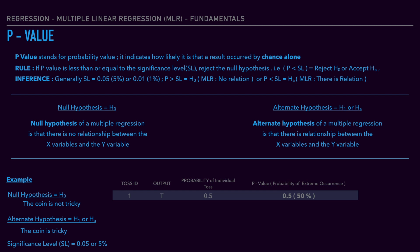First toss, we get a tail. The probability of getting a tail in one toss is 50%, so the P-value is 0.5. We toss again and get tail again. For two continuous tails, we multiply the probabilities: 0.5 × 0.5 = 0.25, so there is a 25% chance. Third toss, we get tail again. The P-value is now 0.5 × 0.5 × 0.5, which gives us 12.5%.